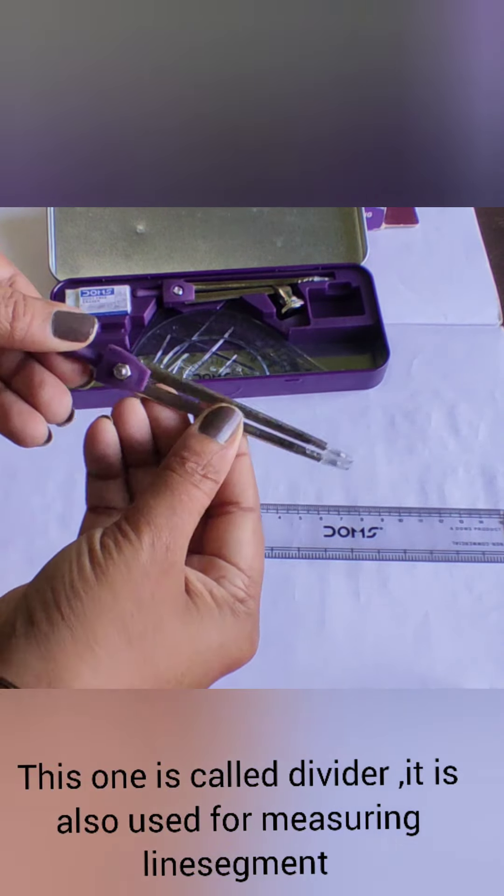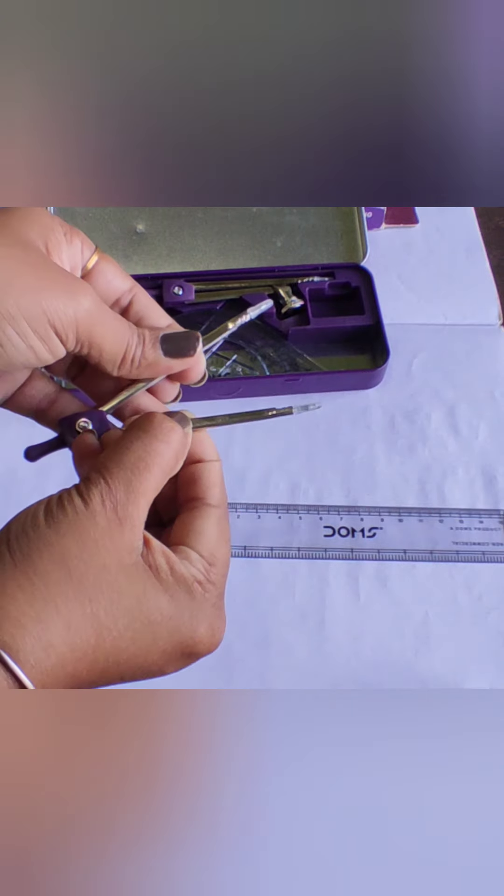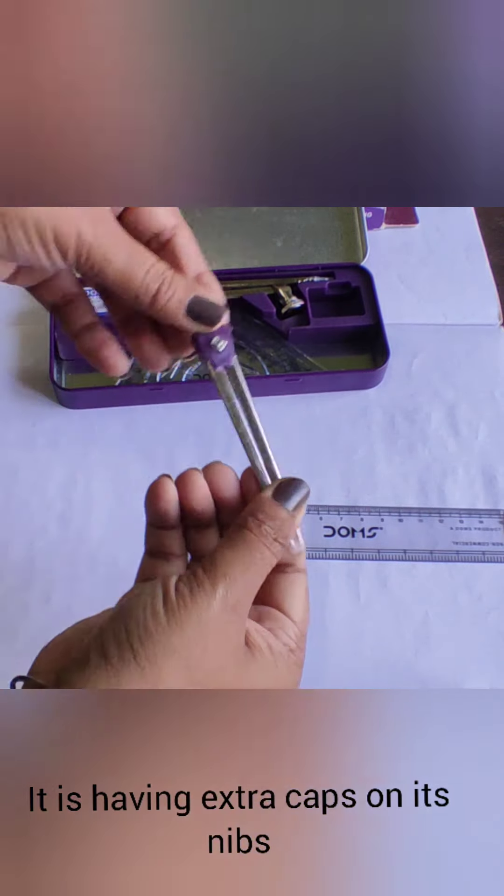Now this one is called the divider. It is also used for measuring the line segment. It has extra caps on it, the nibs.